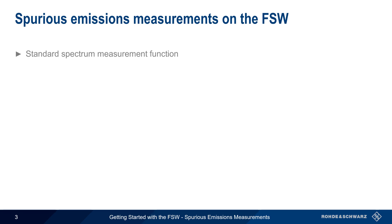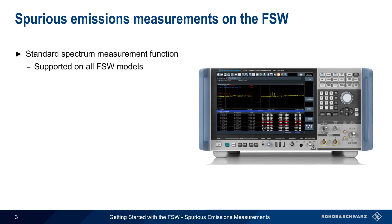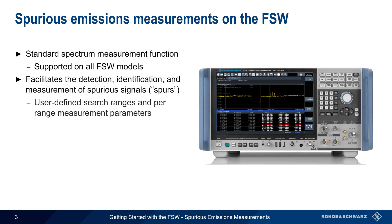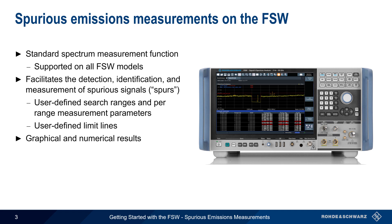Spurious Emissions Testing is one of the standard spectrum measurements on the FSW, and is supported on all FSW Series Analyzers. This measurement facilitates the detection, identification, and measurement of spurious signals, or spurs. The search range and parameters, such as resolution bandwidth, etc., can be defined per search range, and limit lines can also be defined for each range. Results are displayed both graphically and numerically, and the measurement results can be saved and exported.